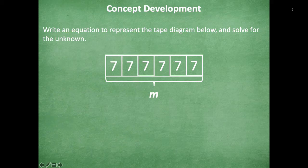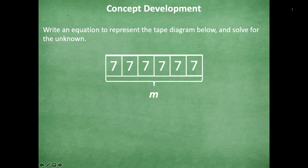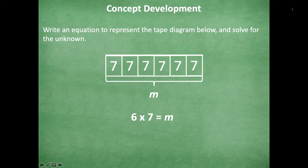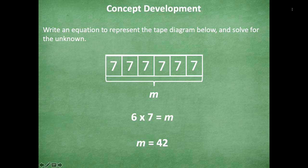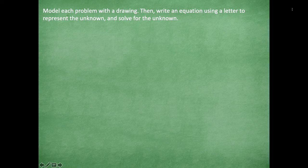All right friends, here's what I came up with. So there are six groups of seven, so that tells me that six times seven is our multiplication problem, and that equals M, which is our unknown. So M equals 42 because six times seven equals 42.